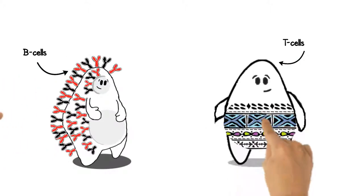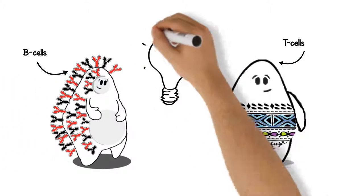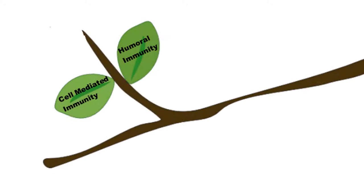So what are B cells and T cells? There are two branches of adaptive immunity which involve B cells and T cells. These are humoral and cell-mediated immunity.